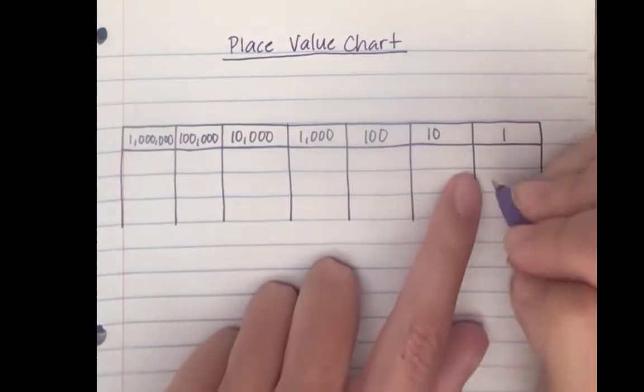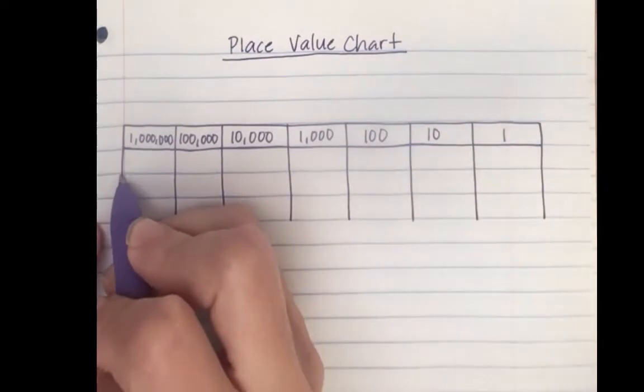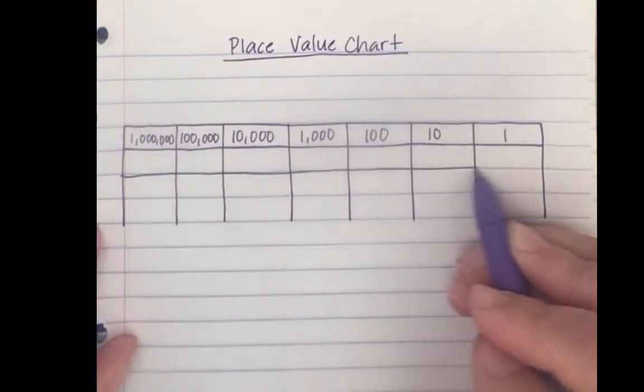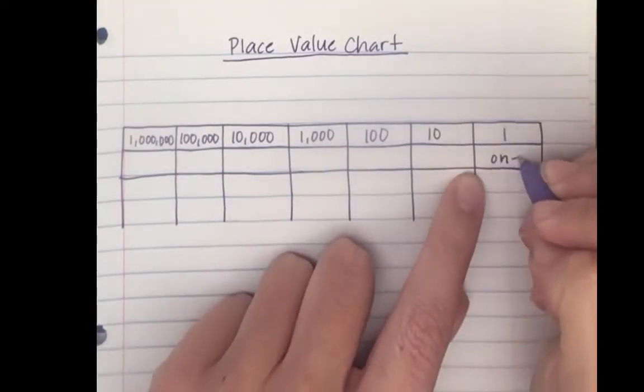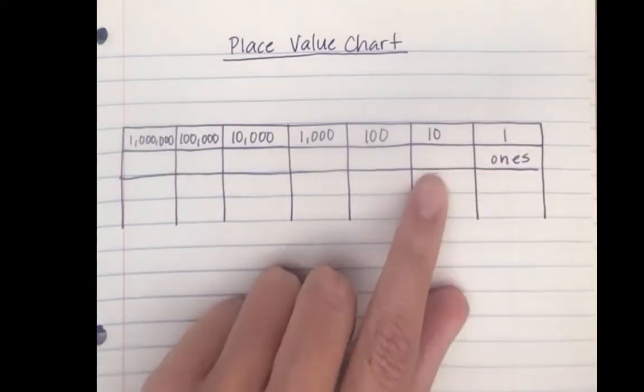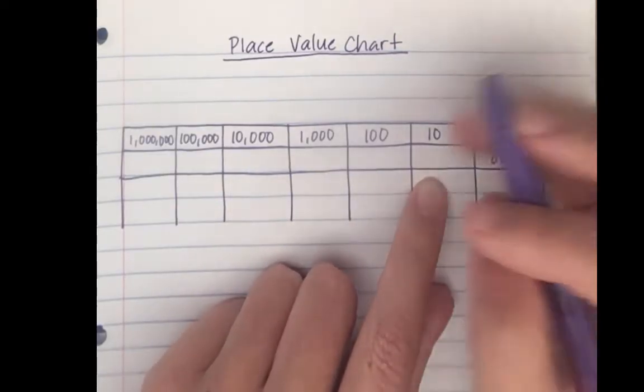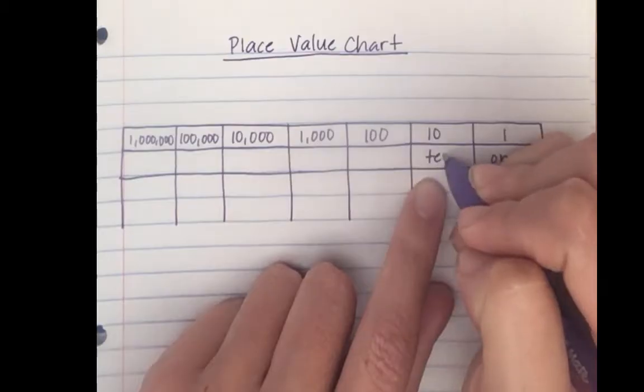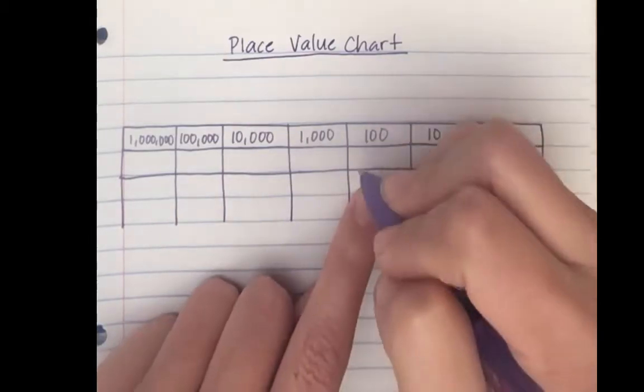I'm going to draw another line across. So this is the ones place. What do you think this one is? That's right. Tens, hundreds.